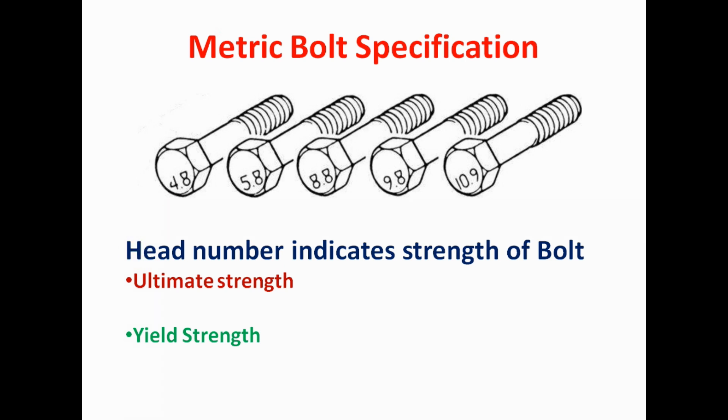This number actually represents the strength of the bolt. This number is written in two digits: 4.8, 5.8, 8.8. This is a two digit number.